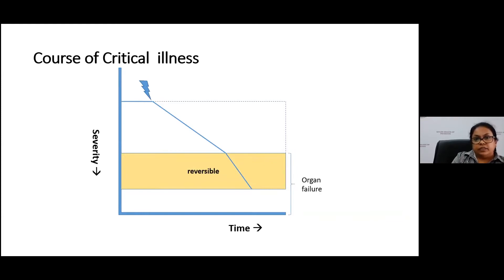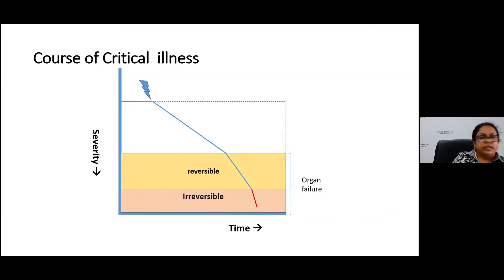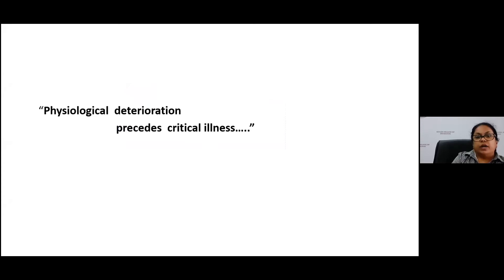As severity increases, there is rapid progression of the illness and it reaches a stage of organ failure. Initially the patient will be in the reversible stage of organ failure, but can quickly move on to the irreversible stage. If a patient reaches this irreversible stage, even in a developed setup there is very little you can do to help them. So the whole idea of managing critically ill patients is to detect them early and manage them before going into irreversible organ failure — ideally at least at the reversible stage.